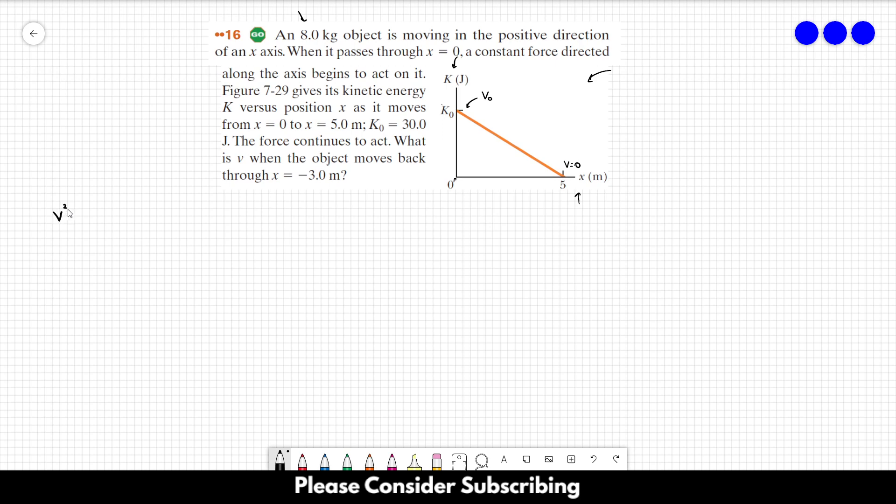Remember that V squared is equal to V₀ squared plus 2 times a delta x. So in this case, we are analyzing from this point to this point over here.